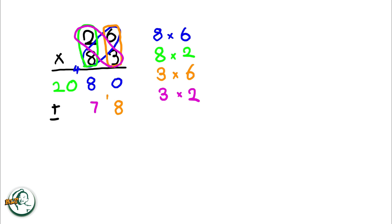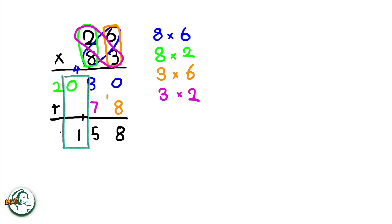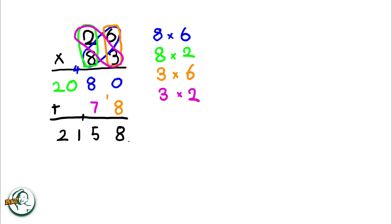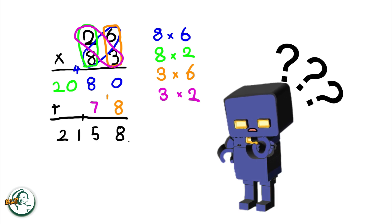Now, we add these two sets of products. Adding 0 and 8 gives us 8. 8 plus 7 is 15. We write down the 5 and carry over the 1, and 0 plus 1 is 1, and here is 2. Therefore, the product of 26 and 83 is 2158.